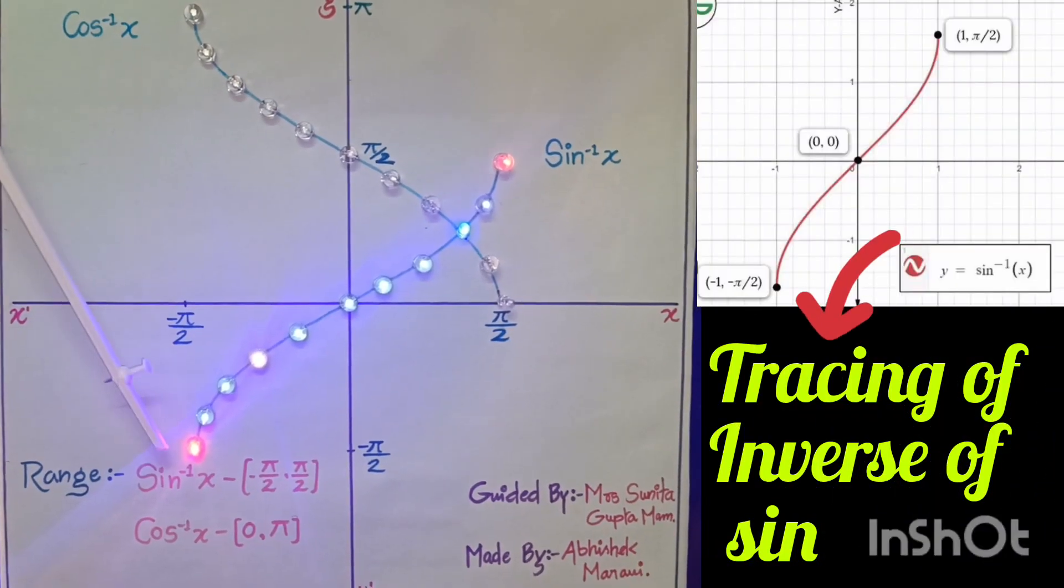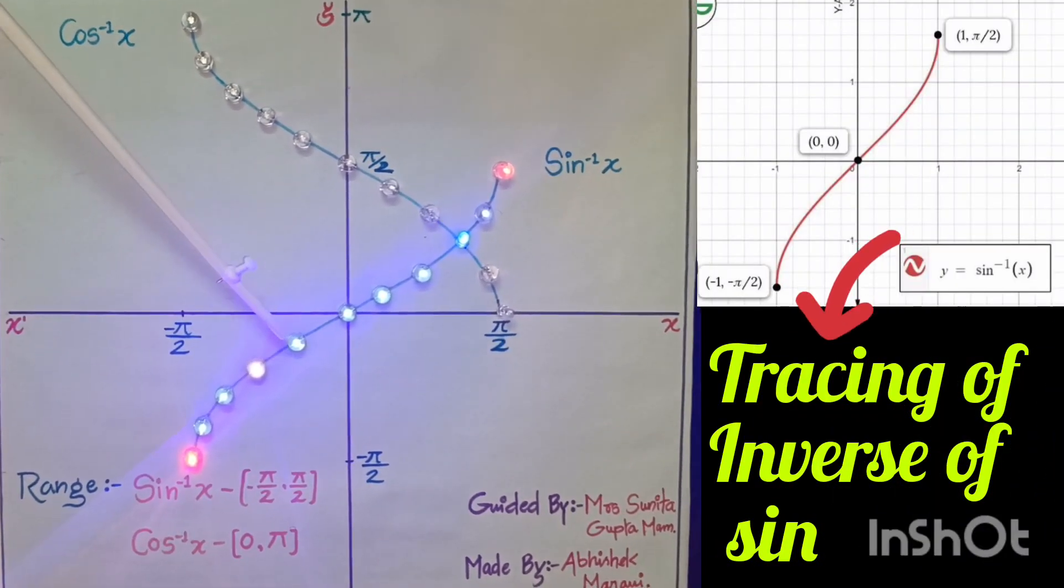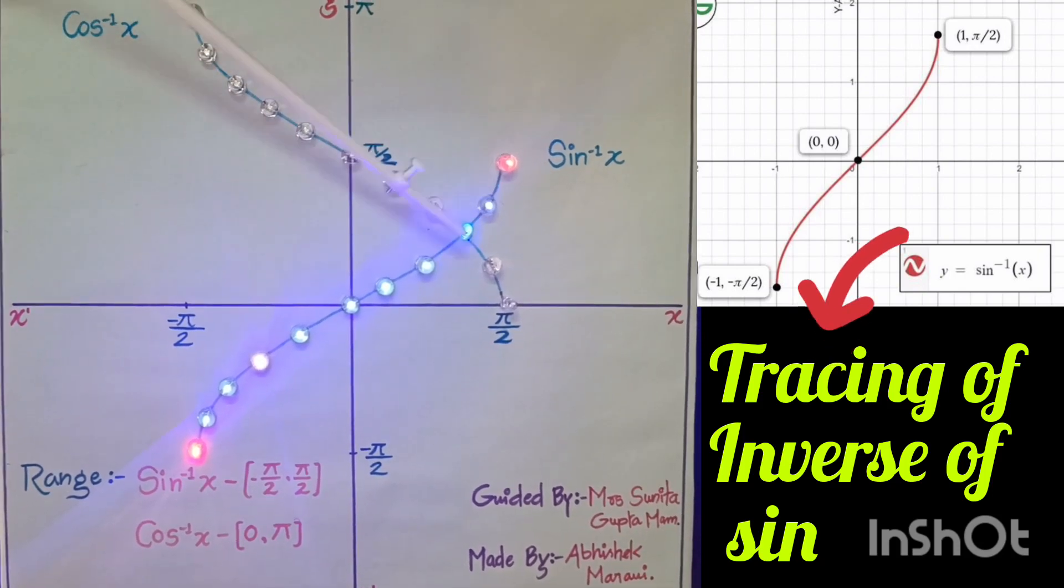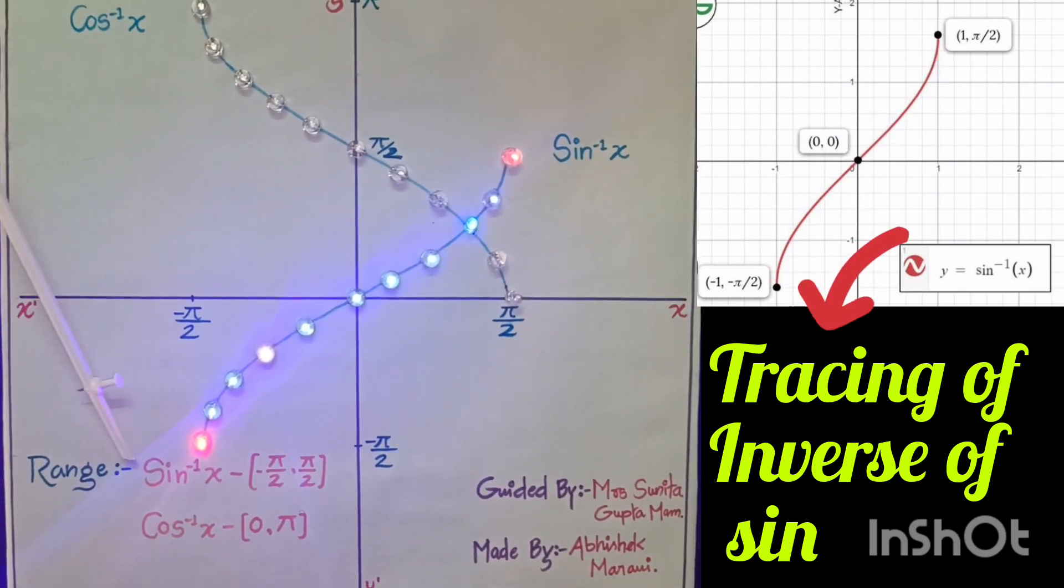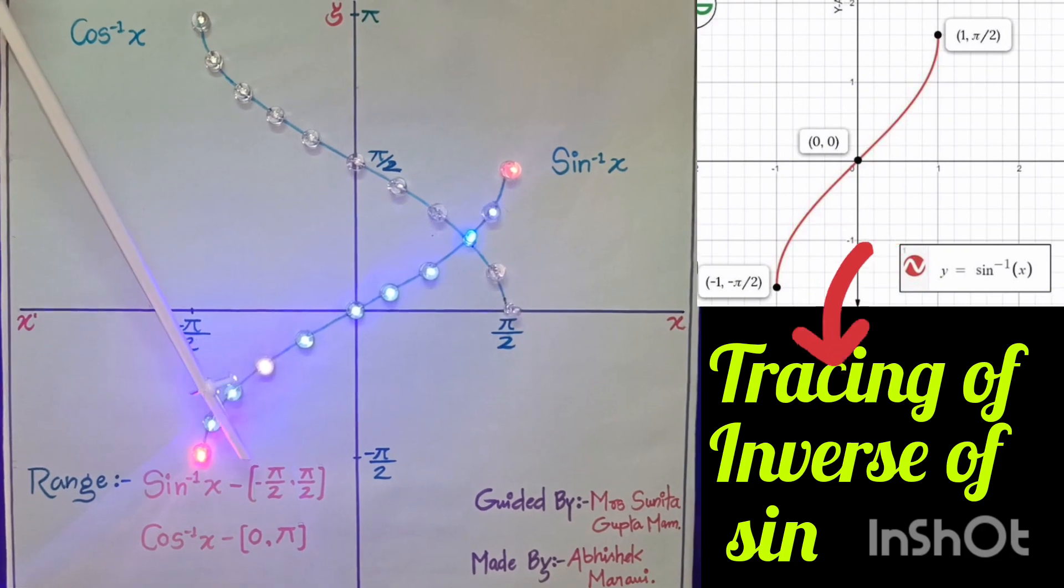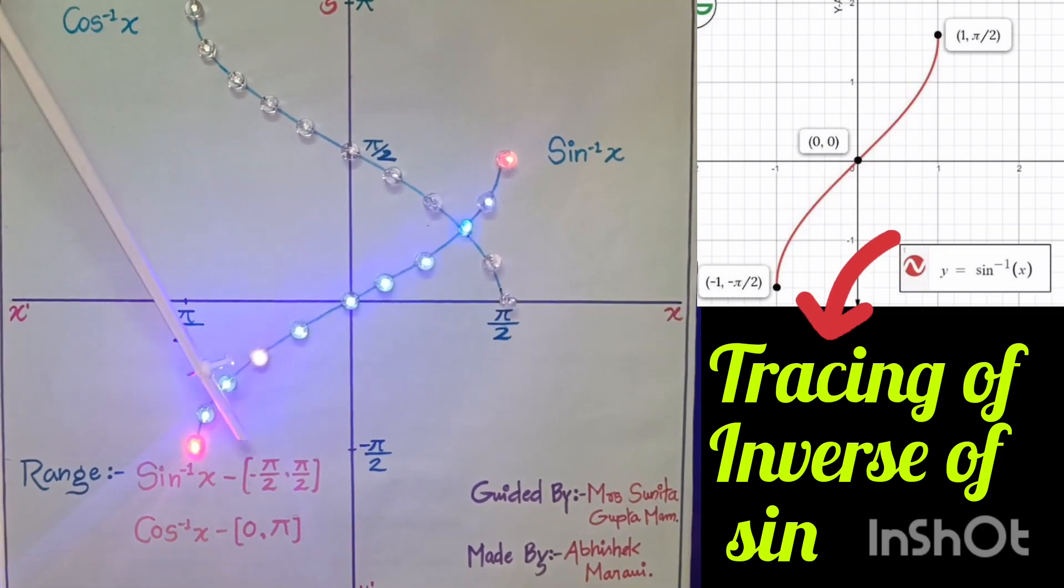Firstly, here I am to represent tracing of sin inverse x. As you see in this model, its range is closed interval minus 90 to plus 90 and its domain is closed interval minus 1 to plus 1.